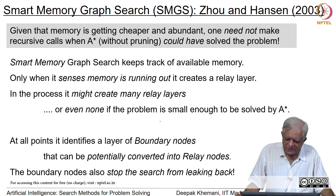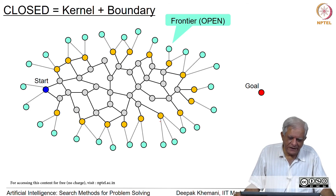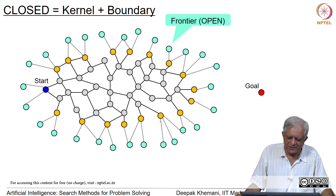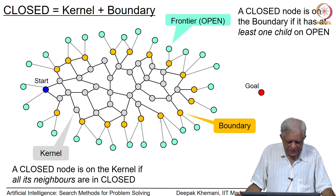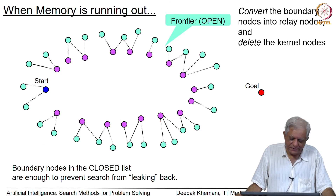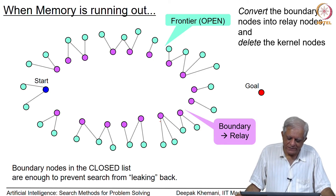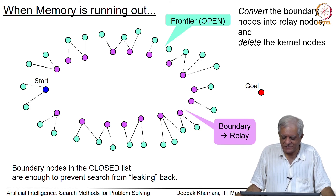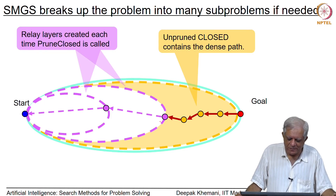This algorithm was given by Zhao and Hansen. They broke the closed list into two sets: kernel and boundary. Boundary was kept to prevent the search from leaking back — serving the original purpose of the closed list — while the kernel could be deleted whenever required. When running out of memory, you simply delete the kernel, convert the boundary nodes into relay nodes, and continue in an A*-like fashion, identifying which closed nodes are in the kernel and which are in the boundary, creating further layers by deleting more kernel nodes as needed, until the problem is solved.